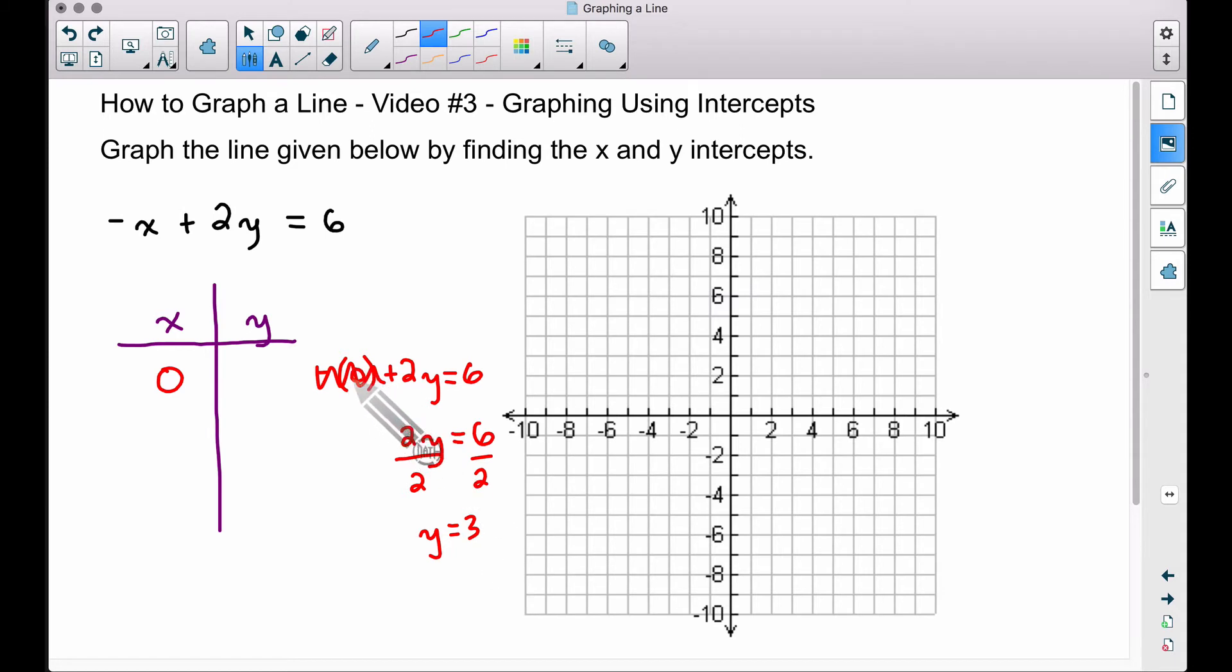Therefore, when x was equal to 0, we get a y value of 3. This is an ordered pair, it is our y-intercept, and (0, 3) lies right there. So what we just found there is we found the y-intercept. And you always let x be 0 when you're trying to find a y-intercept. Do not forget that.